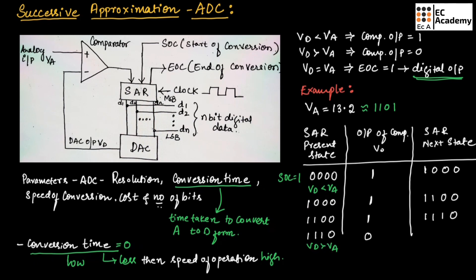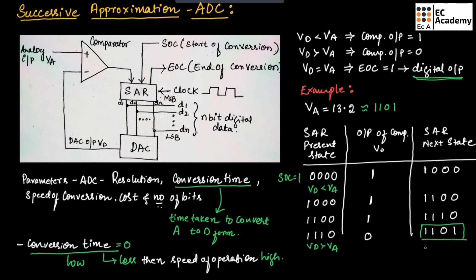Once you get a comparator output of 0, the previous 1 bit is made as 0 and the next bit is made as 1. That is why we get the output as 1, 1, 0, 1. Now in this case, the value of VD will be equal to VA, so end of conversion will be made as 1 and this is taken as the digital output.